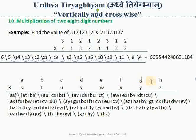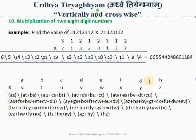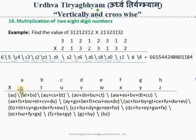In the next step, we are not considering the last column. We take from A to G: A into Y plus G into S, B into X, F into T, C into W, E into U plus D into V, and we write the result here.